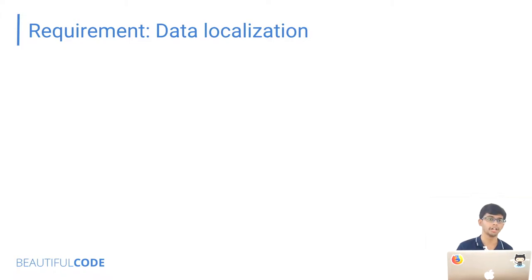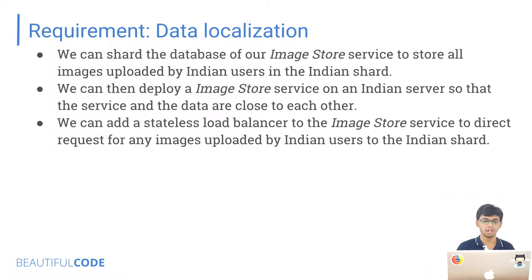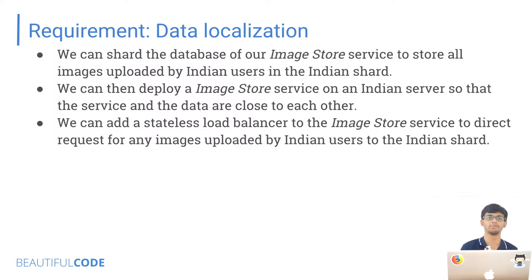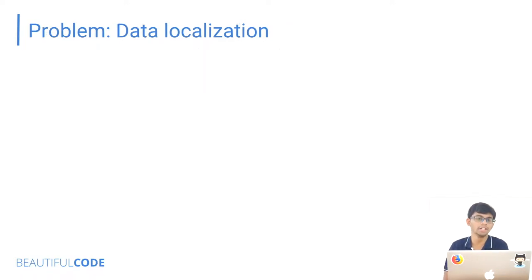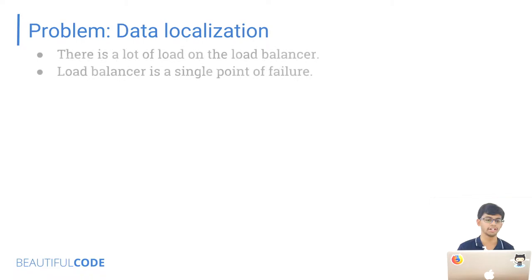To implement this, you could shard your database — have multiple shards, with one shard containing only Indian data stored within the Indian country. You can deploy a load balancer with logic to understand whether the request is from an Indian user and direct it to the Indian shard, or to other shards for non-Indian users. One problem here is that your load balancer becomes a single point of failure, and all your traffic is being directed through it.